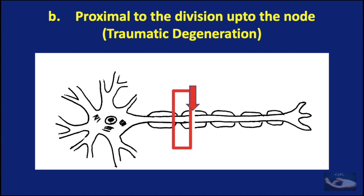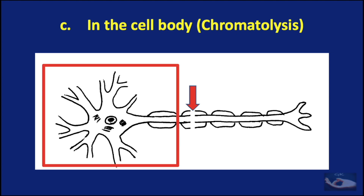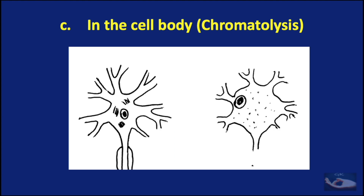One set of degenerative changes proceeds proximally from the site of disruption to the proximal node — this is referred to as traumatic degeneration. The third set of degenerative changes occurs in the cell body in a process called chromatolysis, involving swelling of the cell and pushing of the nucleus to the periphery.